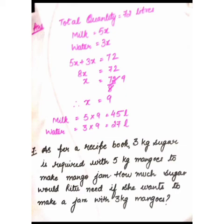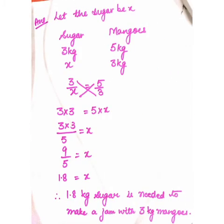Question number 7: As per a recipe book, 3 kg sugar is required with 5 kg mangoes to make mango jam. How much sugar would Ritu need if she wants to make jam with 3 kg mangoes? Let sugar be x. Setting up the proportion: 3/x = 5/3. Cross multiplying: 3 × 3 = 5 × x, so x = 9/5 = 1.8. Therefore, 1.8 kg of sugar is needed.